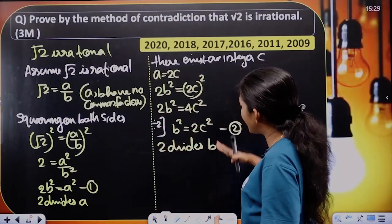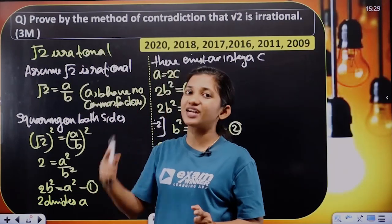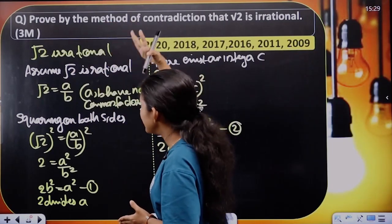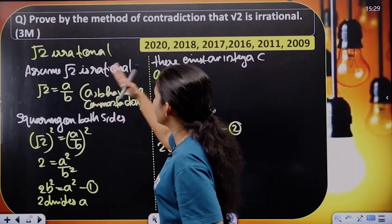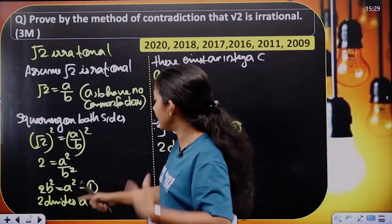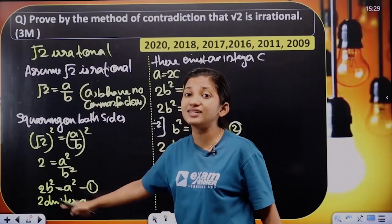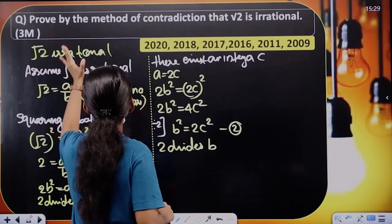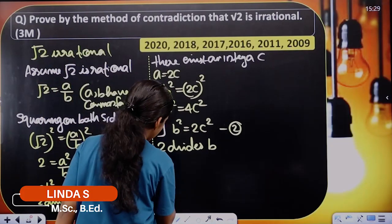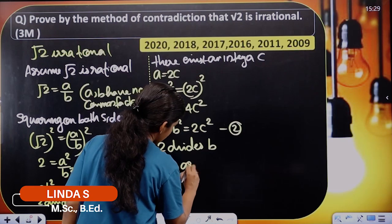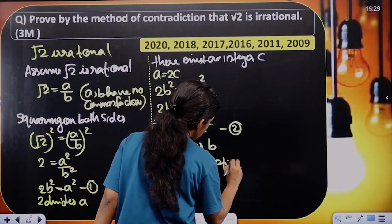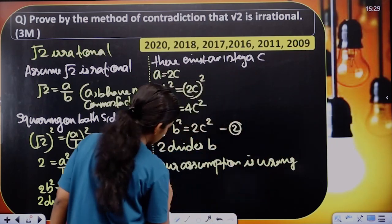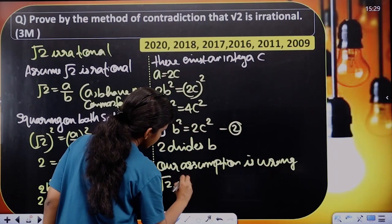From the first equation, 2 divides A, and from the second, 2 divides B. This means 2 is a common factor of both A and B. But we assumed A and B have no common factors — this is a contradiction. So our assumption is wrong, and therefore Root 2 is irrational.